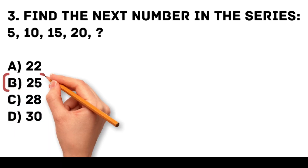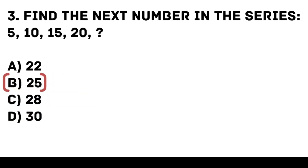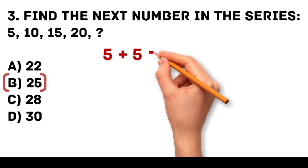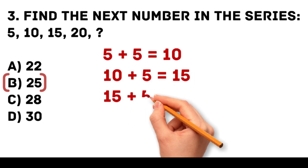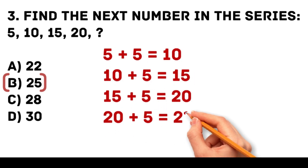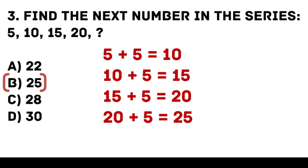Answer: B. 25. Each number is increased by 5. 5 plus 5 is equal to 10. 10 plus 5 is equal to 15. 15 plus 5 is equal to 20. 20 plus 5 is equal to 25.